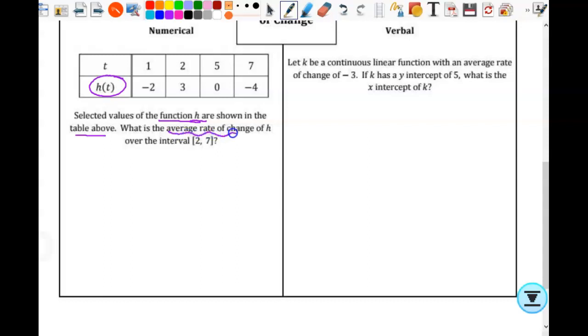We want the average rate of change - we know what that means - of h over this interval. So the first thing we write down, we're going to find the average rate of change. That would be h(7) minus h(2) over 7 minus 2.